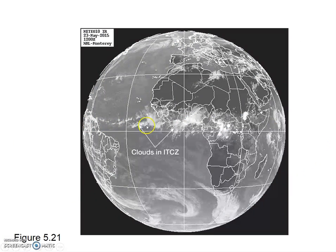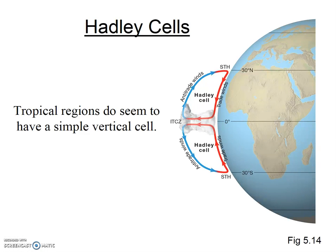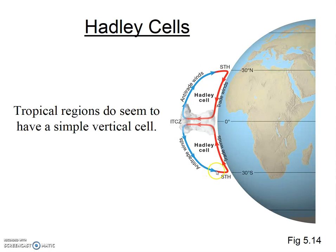You can see the ITCZ in this satellite image near the equator, where there is a preponderance of clouds. The global system does not simply have a convection cell from the poles to the equator, but the tropical regions do seem to have a simple vertical convection cell. Air rises at the equator; at high altitudes the air starts to move poleward, it gets colder, and it descends at about 30 degrees north and 30 degrees south latitude — at what we call the subtropical highs.